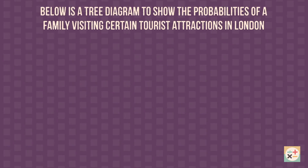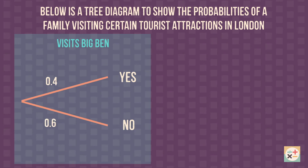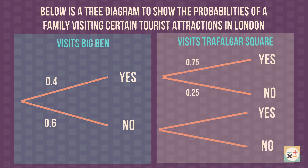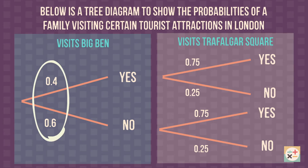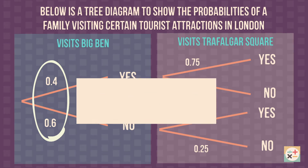Let's look at this example. There are a few important things to remember when using a tree diagram to calculate probability. Firstly, for each set of branches that stem from a point, the probabilities must add up to one. You may find it easier to convert between decimals and fractions depending on which you prefer working with.